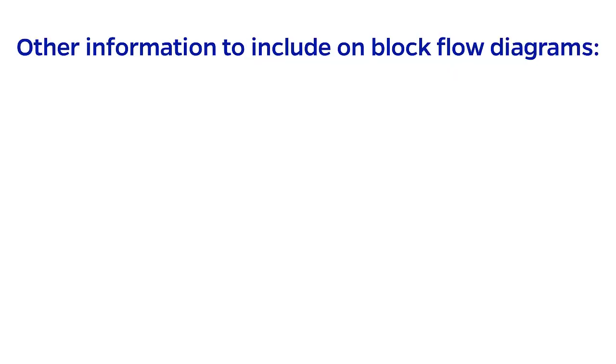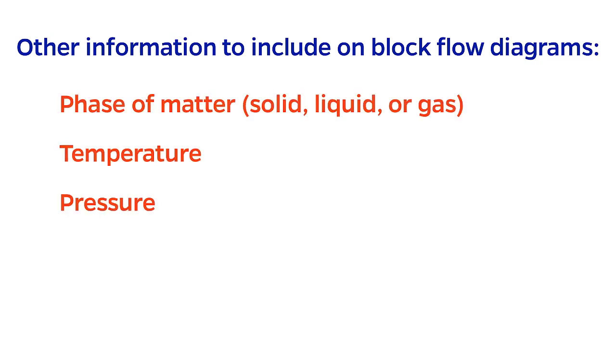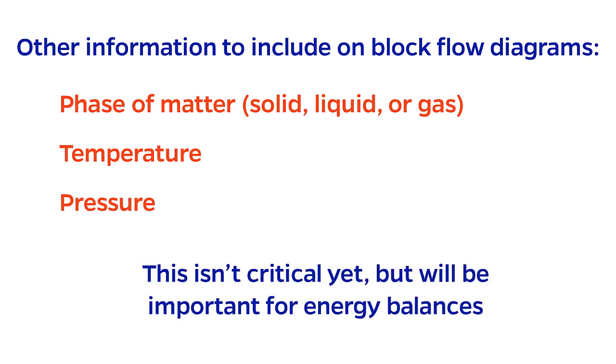Three other pieces of information that you may want to include in your block flow diagrams are the phase of matter, meaning solid, liquid, and gas, temperature, and pressure. This information won't actually become critical for block flow diagrams until later in the course when we get to energy balances, but I've included it here for the sake of completeness.